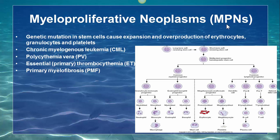MPNs result in expansion and overproduction of erythrocytes, granulocytes, and platelets. Why those three types of cells? You can tell from this figure — we learned this in the previous hematology course.